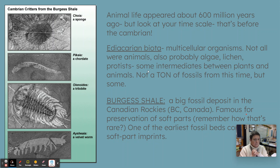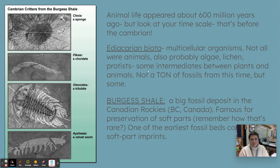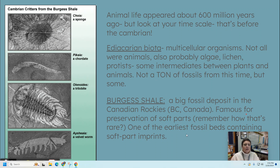Then we get this huge dump of fossils called the Burgess Shale. It's really cool. This is in the Canadian Rockies, and it's a whole bunch of soft parts that got preserved — and you remember that's kind of rare when we talked about fossils. What we need to know about the Burgess Shale: it's in the Cambrian. Between the Ediacaran and the Burgess Shale, which is in the Cambrian, there was this huge explosion of stuff. The Burgess Shale shows a huge jump in the complexity of all of these animals.